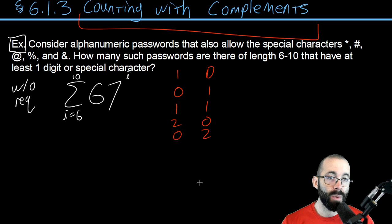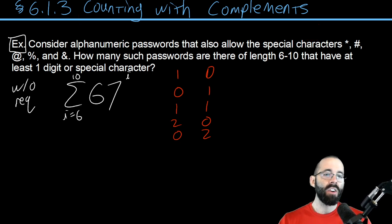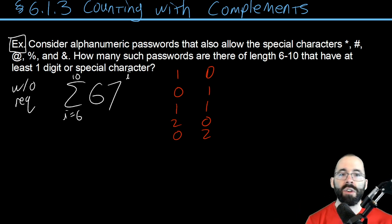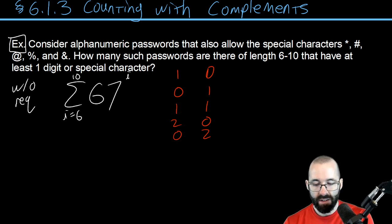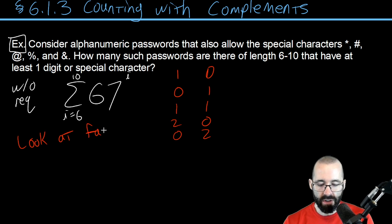But let's count with complements instead. Instead of finding all the things that do work, it's going to be a lot easier to find what doesn't work. We know the total number of possible passwords with or without the requirement. How many of these passwords, how many of these many, many, many, many passwords, how many of these don't have any digits or special characters?